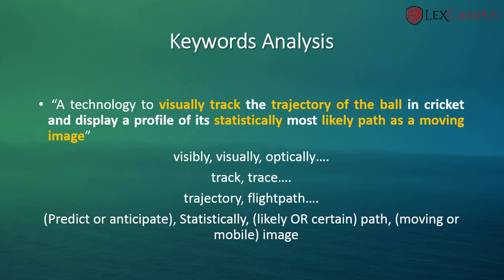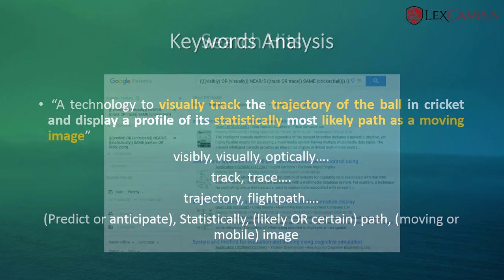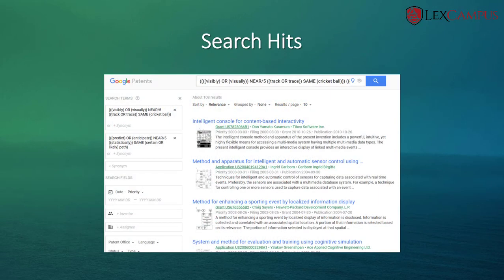The word 'statistically' can be replaced by 'likely' or 'certain', or it could also be 'predict' or 'anticipate'. With all the keywords extracted and the synonyms in place, the next step would be to key in the extracted keywords into Google Patents search.